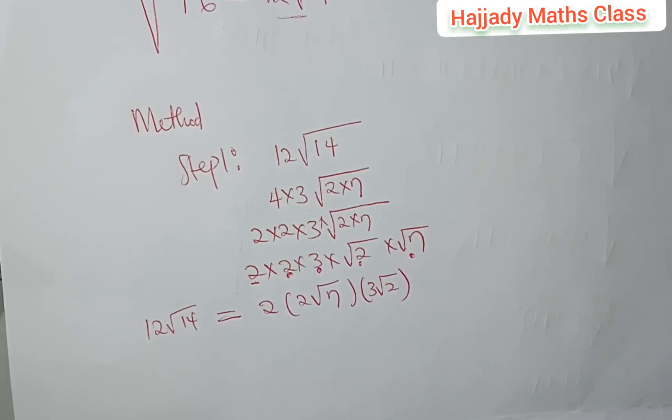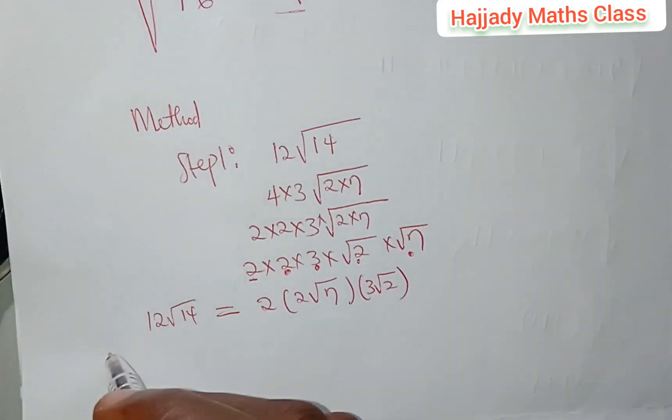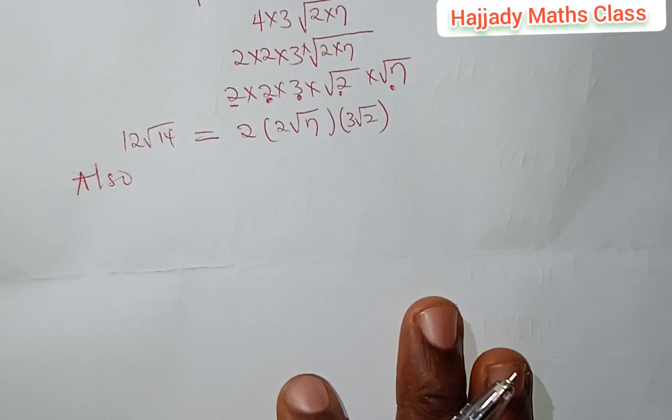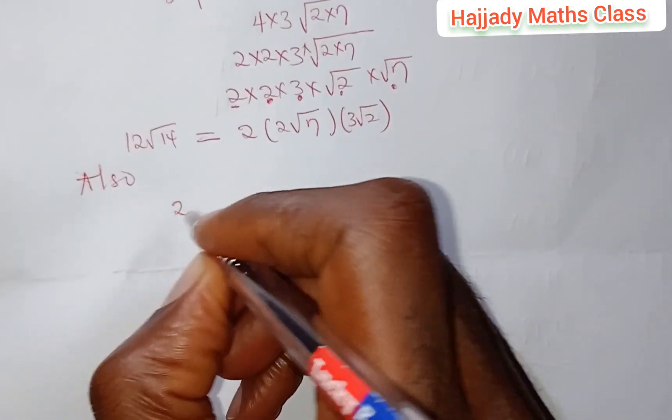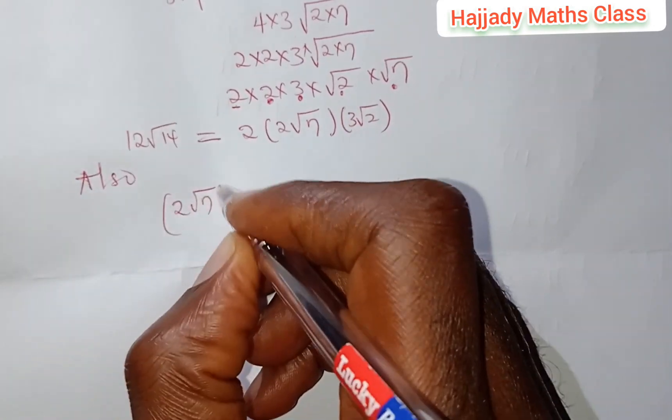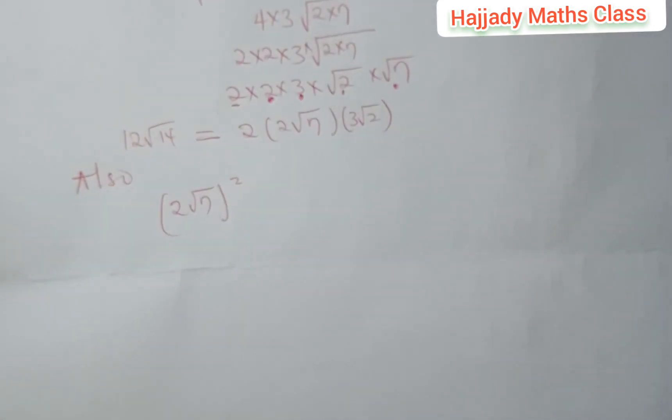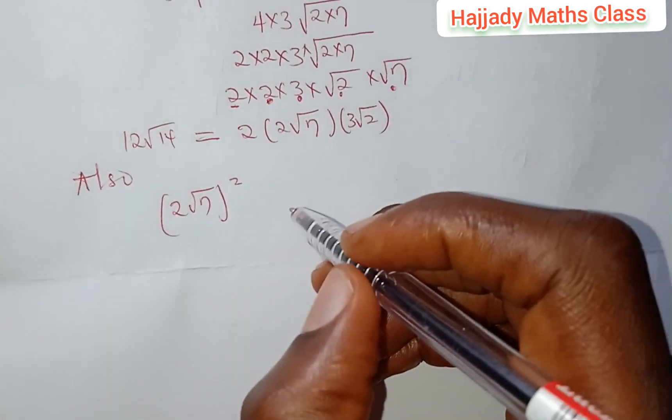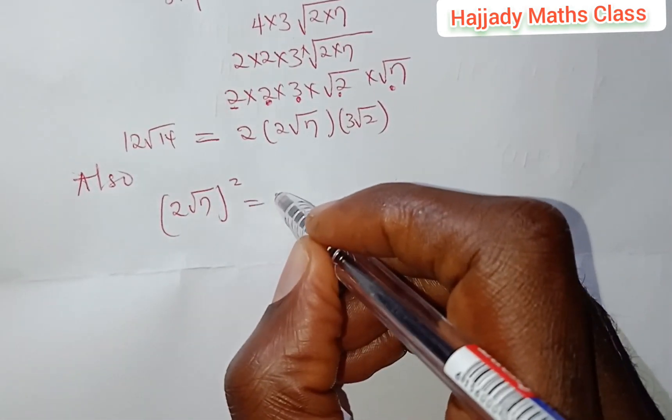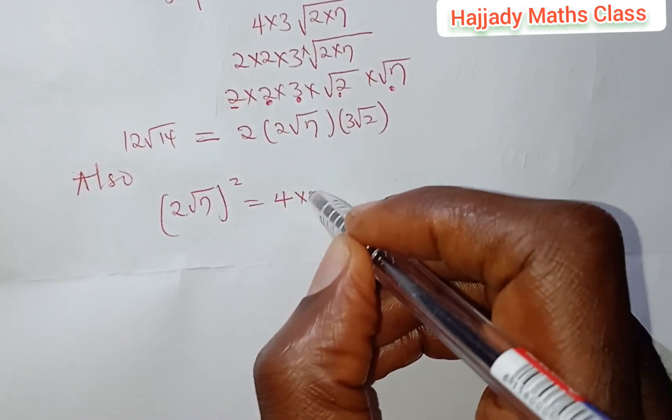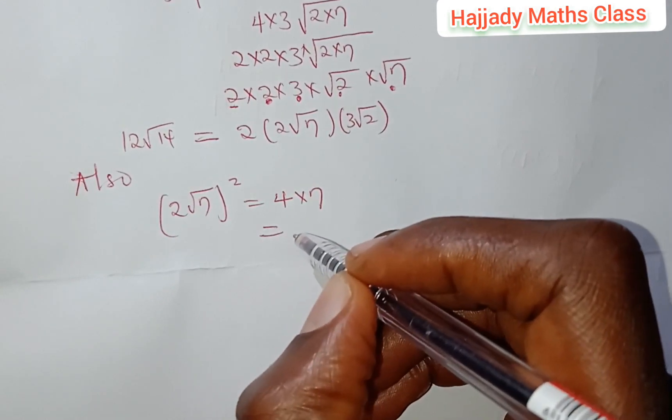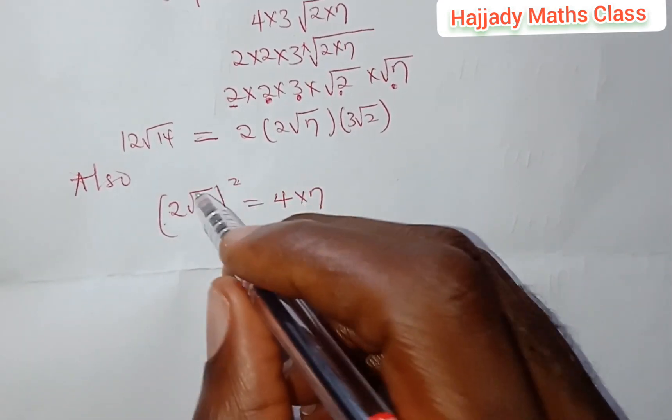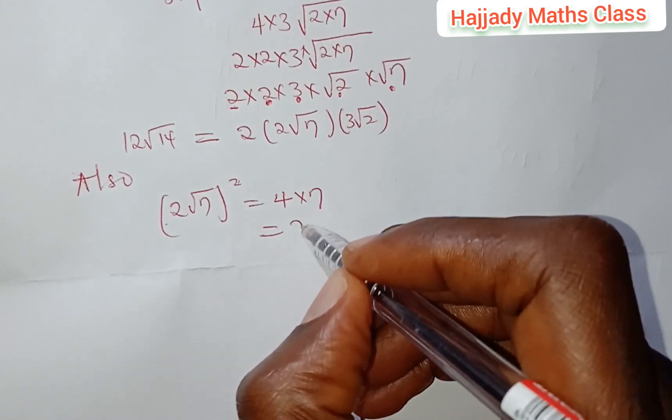That is the first step that I would like us to take note of. Also, we can have something like this. If 2√7 is being squared, we can possibly have 4 × 7. The square root squared will cancel out. So here we have 28.